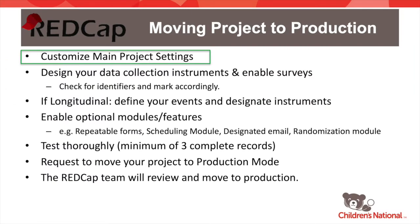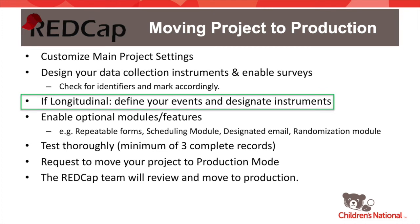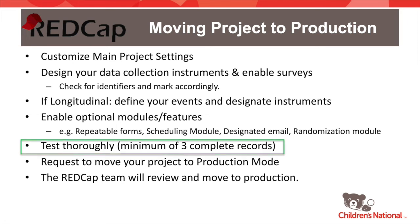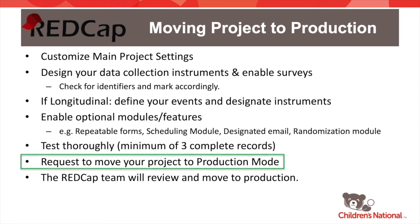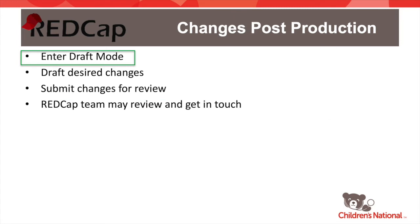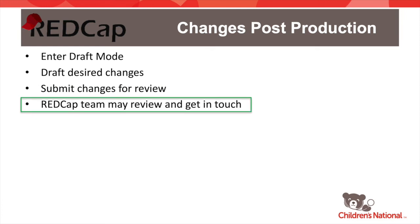To recap: when you're ready to move to production, make sure you've customized your main project settings, designed your data collection instruments and enabled any as surveys, defined your events and designated your instruments if your project is longitudinal, enabled any optional modules or features such as repeatable forms or the scheduling module, and tested all of your forms thoroughly with a minimum of three complete records. Then send a request to move your project to production mode and the REDCap team will review and move it. If you need to make a change post-production, enter draft mode via the online designer, draft your desired changes, submit them for review, and the REDCap team will reach out if necessary.